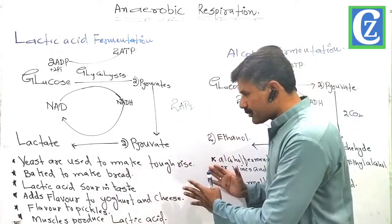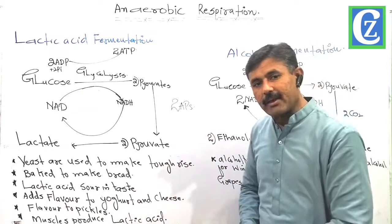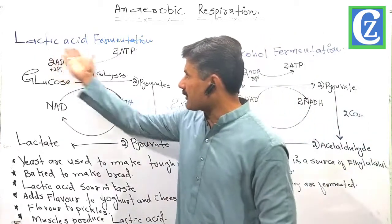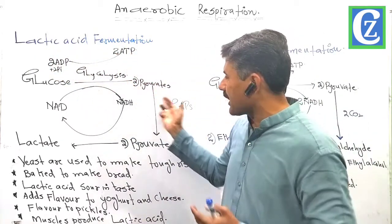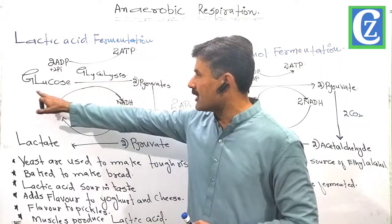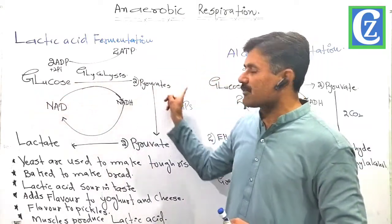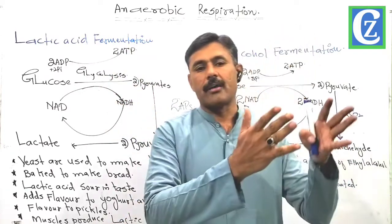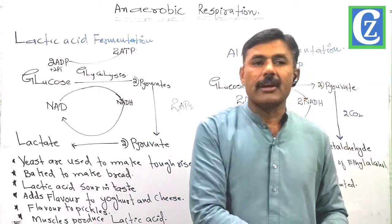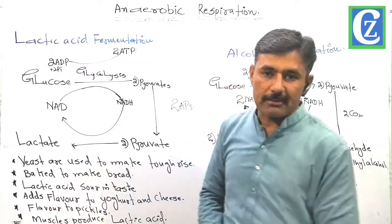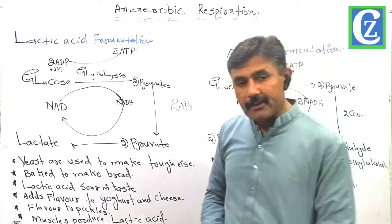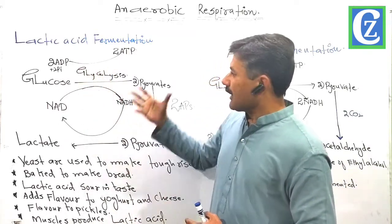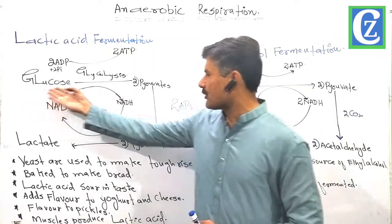What actually happens during these processes, why they are important, and what amount of ATP they produce — we are going to cover lactic acid fermentation first. What actually happens? We need pyruvates. To produce pyruvates, the first process is common: glucose, by the process of glycolysis, converts into two molecules of pyruvates. This is a common story for both prokaryotes and eukaryotes, unicellular and multicellular organisms. Wherever cellular respiration takes place, glycolysis converts glucose into two molecules of pyruvates.